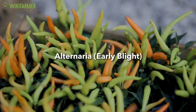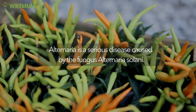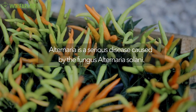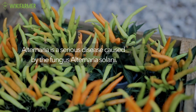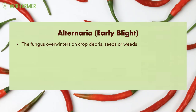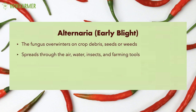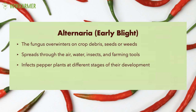Alternaria Early Blight. Alternaria is a serious disease caused by the fungus Alternaria solani. The fungus overwinters on crop debris, seeds or weeds and is spread through the air, water, insects and farming tools. Alternaria infects pepper plants at different stages of their development. Unfortunately, Alternaria may cause fruit rot even after harvest.